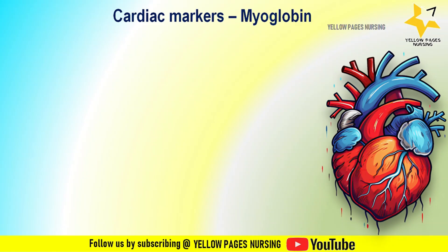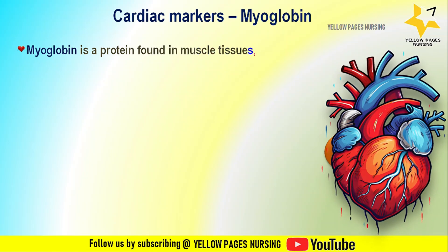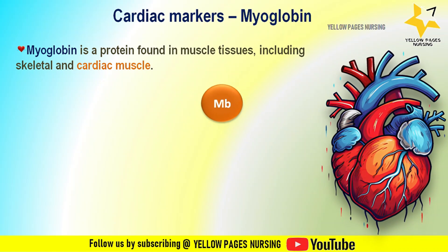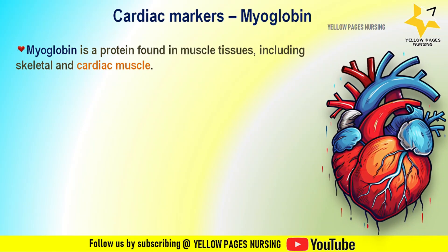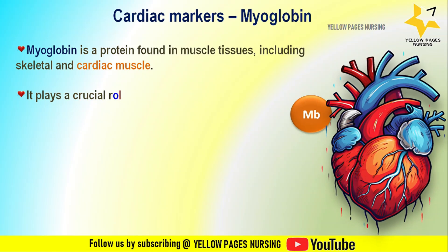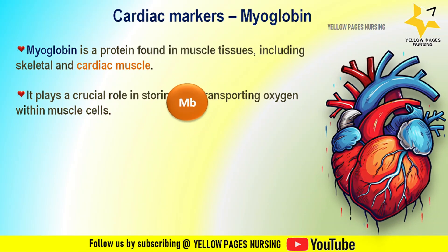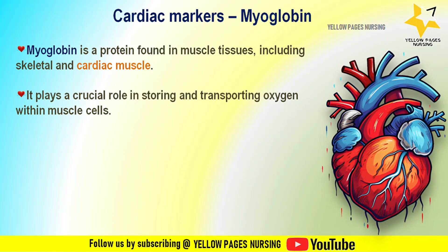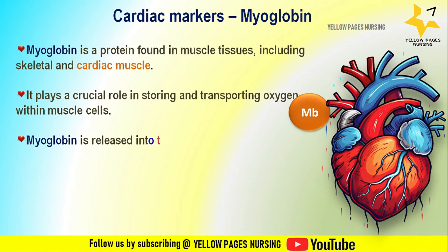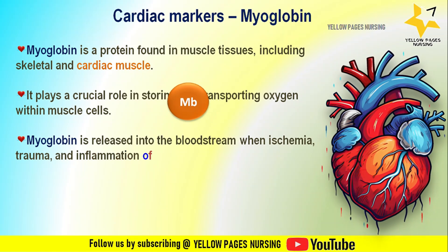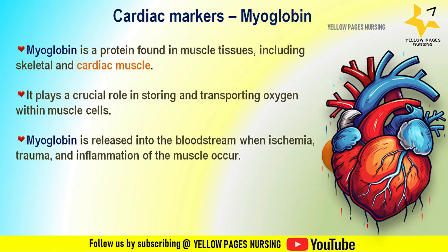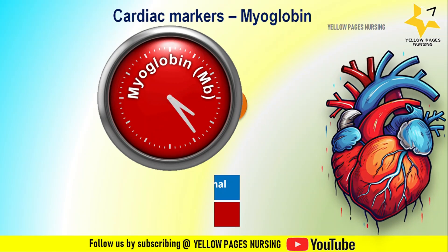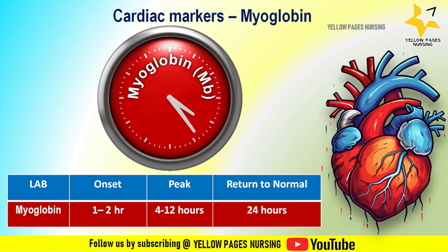Myoglobin is a protein found in muscle tissues including skeletal and cardiac muscle. It plays a crucial role in storing and transporting oxygen within muscle cells. Myoglobin is released into the bloodstream when ischemia, trauma, or inflammation of the muscle occurs.